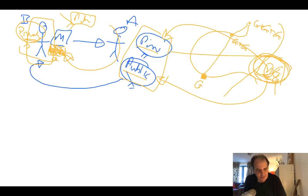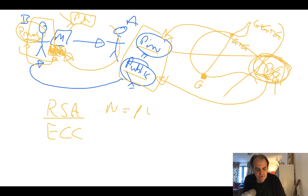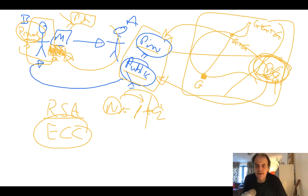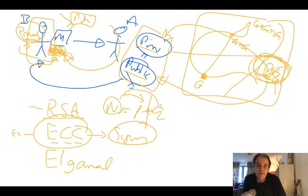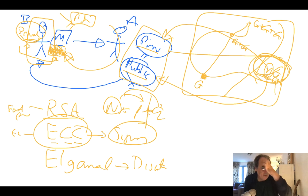The two most common types of public key encryption are RSA and elliptic curve cryptography. With RSA, we take two prime numbers and multiply them together to give a modulus n, and the difficulty becomes the factorization of n back into p and q. Elliptic curve cryptography is typically used for signing and not so much for the encryption process. We'll have a look at the third method, ElGamal.